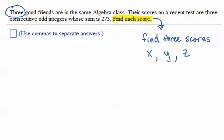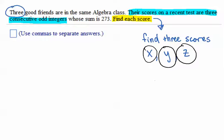Let me highlight as I talk. Their scores on a recent test are three consecutive odd integers. Knowing this persuades me to not just call them x, y, z, but to use the relationship that they are consecutive odd integers of one another. So I'll let the first one remain labeled as x. But what would the next odd integer be labeled as?